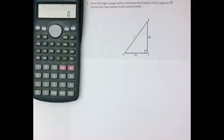Okay, here's the first Pythagoras question from the quiz I worked out and solved for you. It says, given the right triangle below, determine the distance of line segment AB.